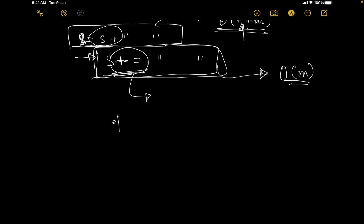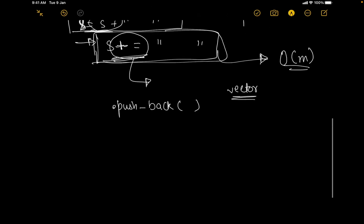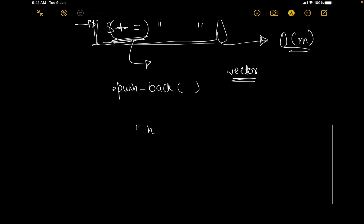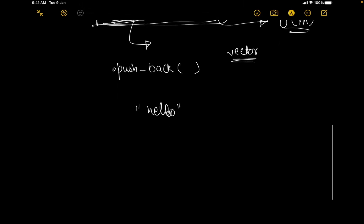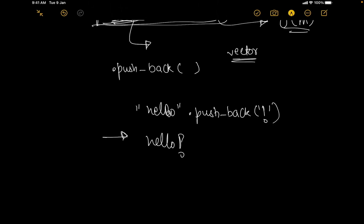There is also something called push_back — that sounds familiar from vectors, right? In strings we also have a push_back operation. If I have the string 'hello' and I push_back an exclamation mark, it becomes 'hello!'. So push_back basically means pushing a character to the end of the string.